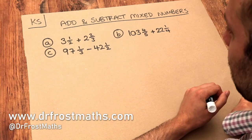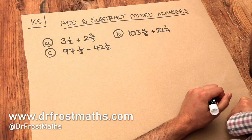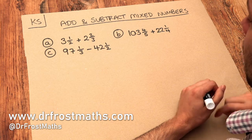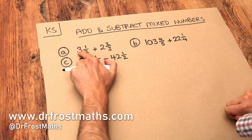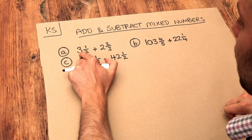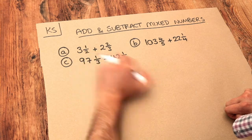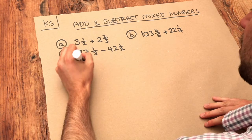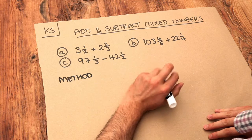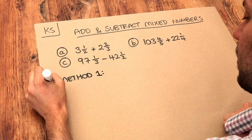Hello and welcome to this Dr. Ross Maths key skill video on adding and subtracting mixed numbers. Remember, a mixed number is where your number has a whole part — this three here — and a fractional part — this half here. One strategy is just to convert the mixed numbers into improper fractions first. So let's try that.